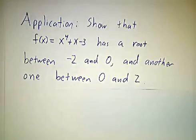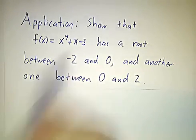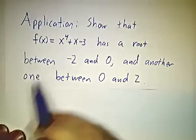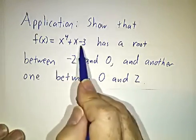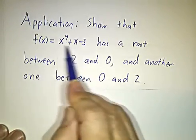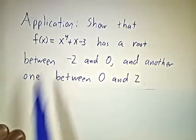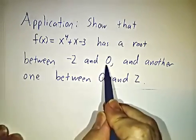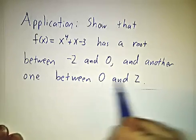And I'll bet you never had to do one as ugly as x^4 plus x minus 3. Now, you don't have any formulas, or at least no reasonable formulas, for computing exactly what the roots are. But I claim that there's a root between negative 2 and 0, and another root between 0 and 2.